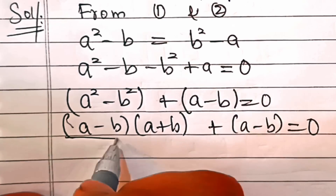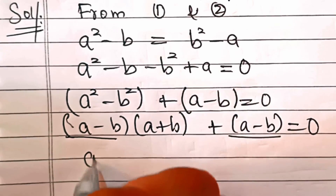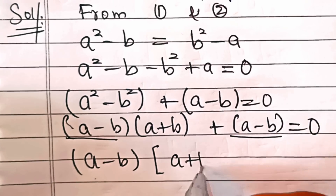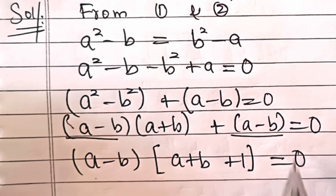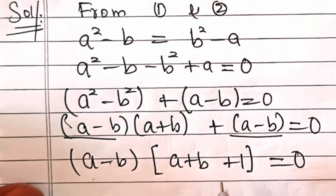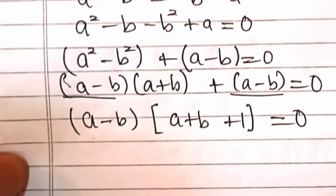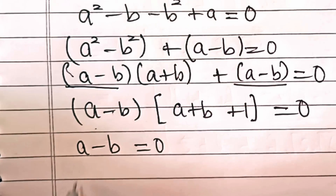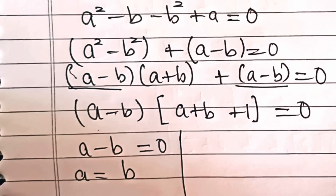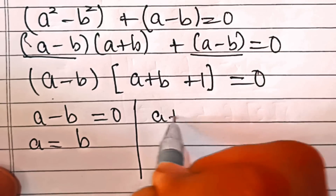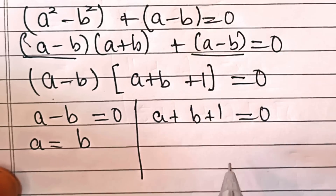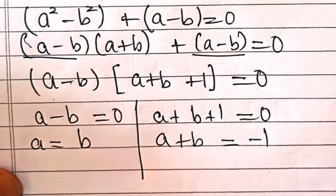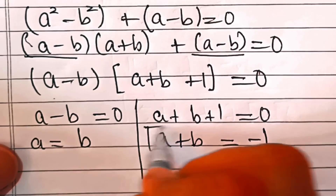We take a minus b as a common factor, giving us: a minus b, times (a plus b plus 1), equals 0. Either factor can be zero. If a minus b equals 0, then a equals b — but that's excluded. So we use the other case: a plus b plus 1 equals 0, meaning a plus b equals minus 1. Let's call this equation 3.